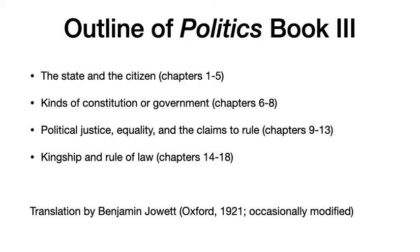To give an overall outline of Book 3, the first five chapters are devoted to the fundamental definitional issues of what is the state and what is the citizen. Chapters 6 to 8 deal with the various kinds of constitution or government. Chapters 9 to 13 deal with political justice, equality, and the claims to rule, while chapters 14 to 18 deal with kingship and the rule of law. But this isn't just a random grab bag of topics — each successive topic builds on the previous ones.